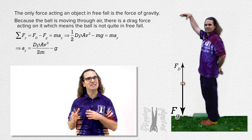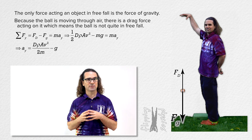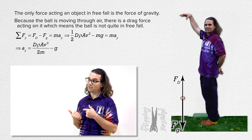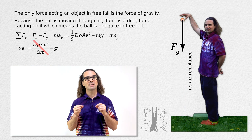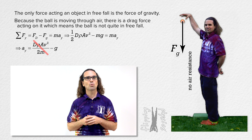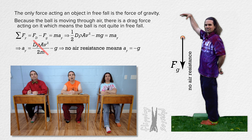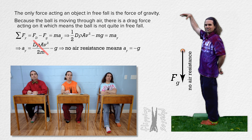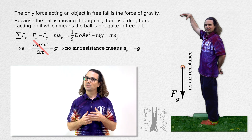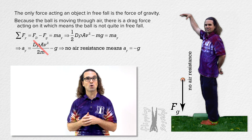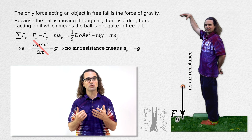Notice that in the absence of air resistance, the drag term cancels out and the acceleration in the y-direction equals negative g, because without air resistance the object is in freefall with acceleration equal to the negative of g. And the same is true right at the moment the object is dropped.